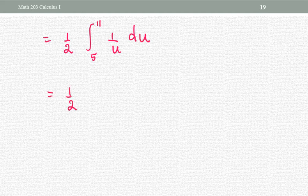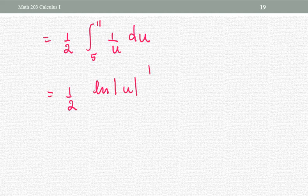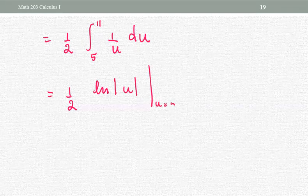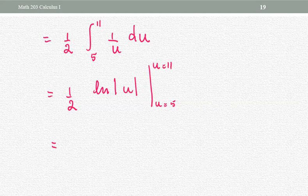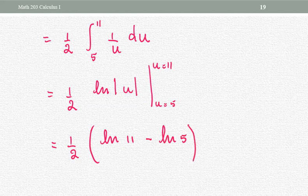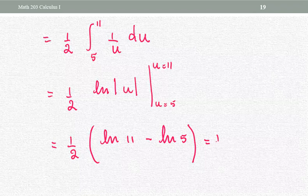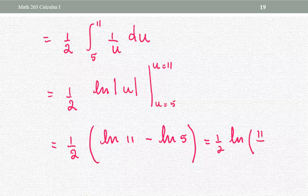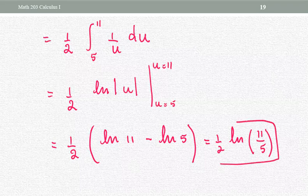The antiderivative of one over u is natural log of the absolute value of u. We put the evaluation bar and replace the lower and upper limits to get the final result. The coefficient one-half goes outside the parentheses; we evaluate natural log of eleven minus natural log of five. You can stop here, or use the log property that the difference of logs is the log of the quotient — giving one-half times natural log of eleven-fifths. This is the exact form of the solution.